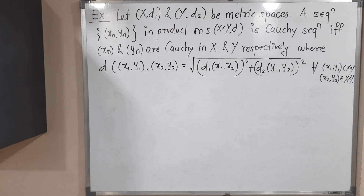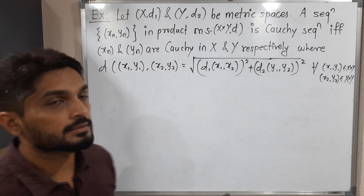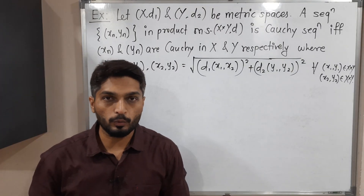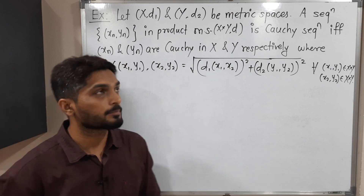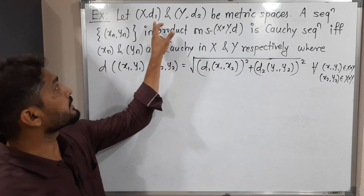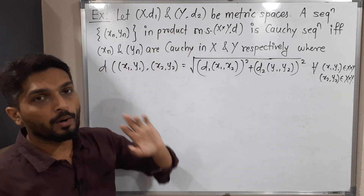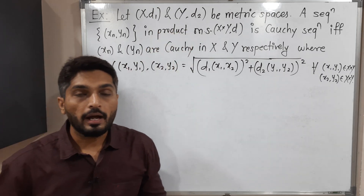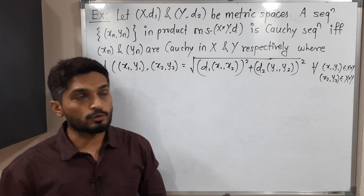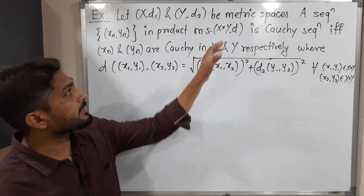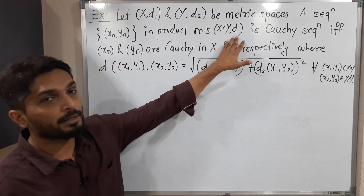Hi everyone. In this video we are going to discuss this example. So here we have two metric spaces, X with metric d1 and Y with metric d2. And we have a product metric space also, X cross Y with metric d.